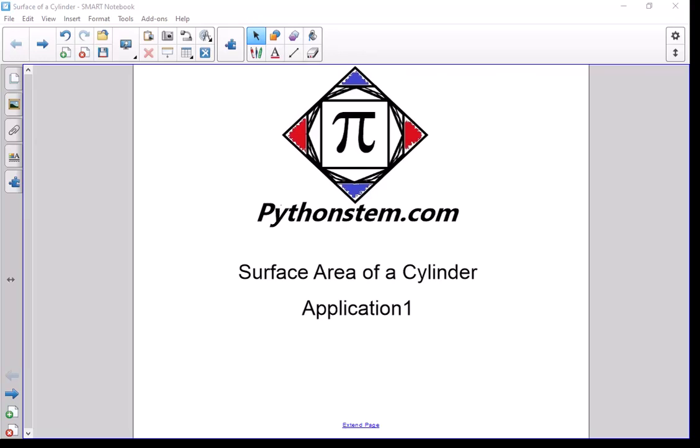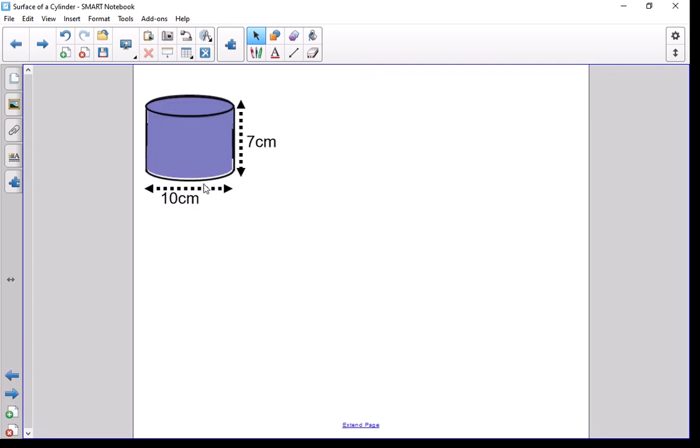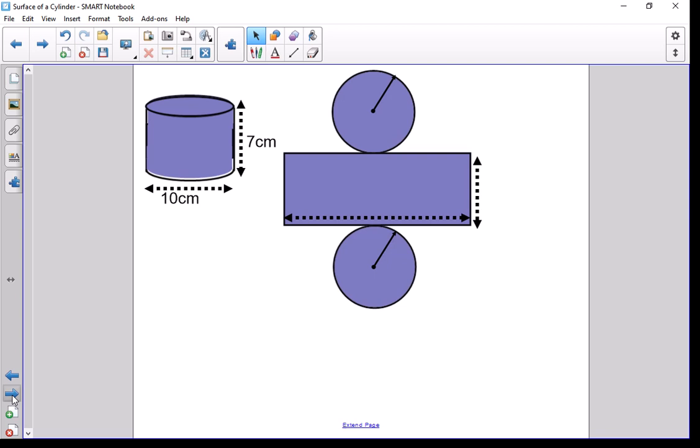Let's go over the surface area of a cylinder and apply it to a scenario. So here's our cylinder. It has a distance across of 10 centimeters, that's across the circle, that would be the diameter of the circle. We've got a height of 7. Now when we consider the surface area, it's a good idea to think about the net that you would need to make up this cylinder.